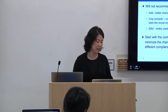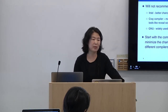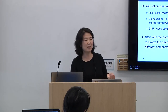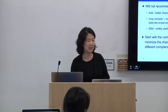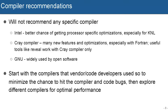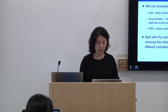If you choose Intel compiler, you have a better chance of getting processor-specific optimization, since these are Intel processors and Intel likely does a better job optimizing code for their own processors — especially for newer processor types like KNL. If you want to use the Cray compiler, it has many up-to-date features and a lot of optimizations. Cray is especially strong with their Fortran compilers, so you can try Cray compiler if you want to explore the options.